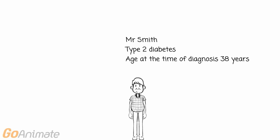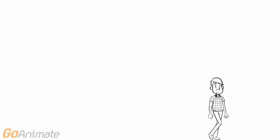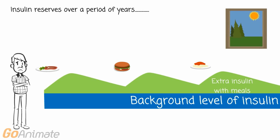So what happens in a patient with type 2 diabetes? Unlike in type 1 diabetes, in type 2 diabetes, insulin reserves go down over a period of time.